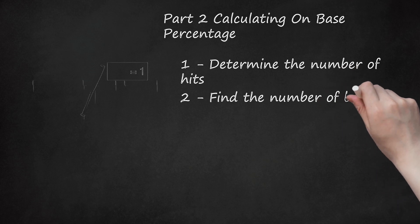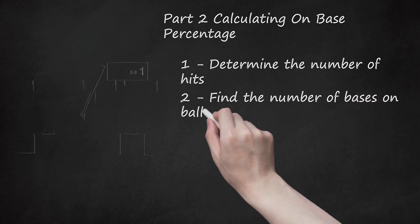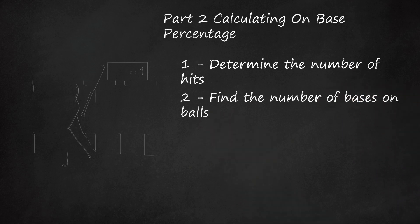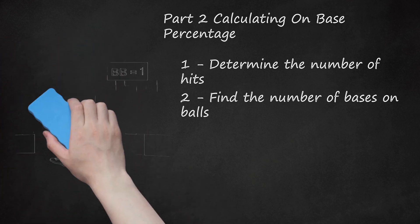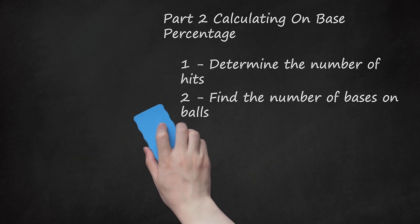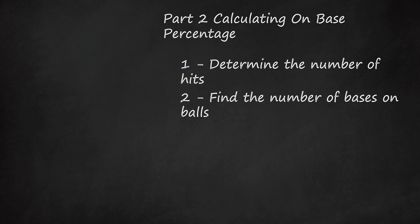Find the number of bases on balls. Once you've noted the number of hits, note also the number of times the player reached first base because he received four pitches outside the strike zone. In the example above, Charles Cobb Blackman was walked just once. In this case, BB would equal one.